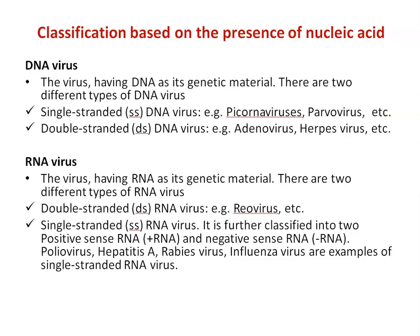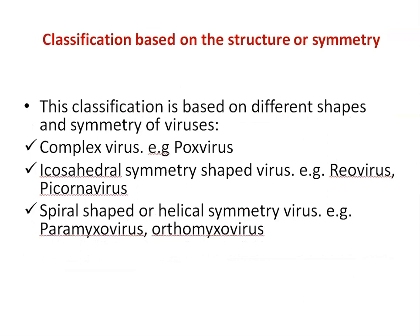The next classification is based on structure or symmetry — the different shapes and symmetry of the virus. Complex viruses, for example, poxvirus. Icosahedral symmetry-shaped viruses, for example, reovirus. Spiral-shaped or helical symmetry viruses, for example, paramyxovirus and orthomyxovirus.